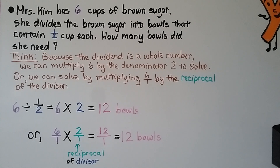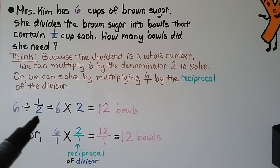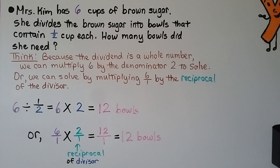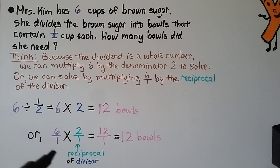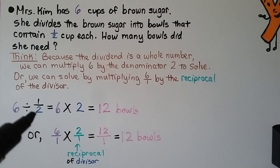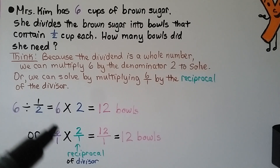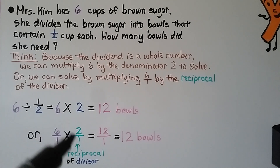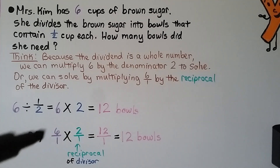Mrs. Kim has 6 cups of brown sugar. She divides the brown sugar into bowls that contain 1 half cup each. How many bowls did she need? Because the dividend is a whole number, we can just multiply 6 by the denominator 2, since it's a unit fraction — 6 times 2 equals 12 bowls. Or we can solve by multiplying 6 over 1 by the reciprocal of the divisor 1 half, which is 2 over 1. 6 times 2 is 12, and 1 times 1 is 1 — that equals 12 bowls.